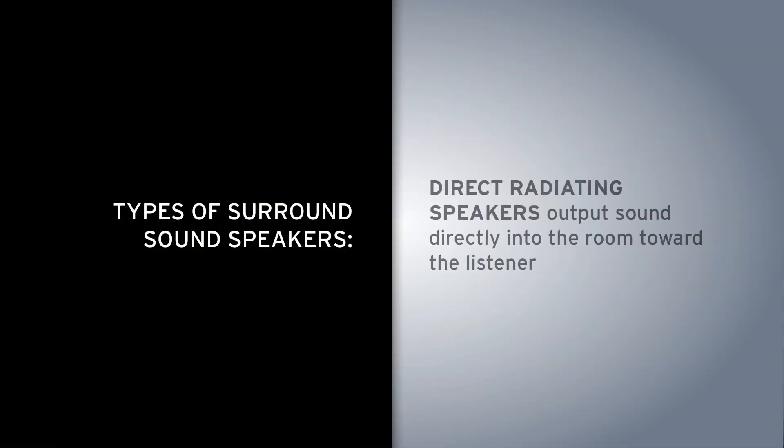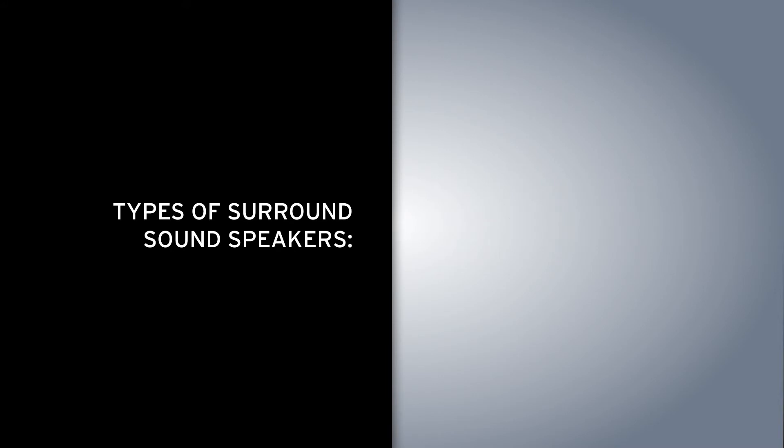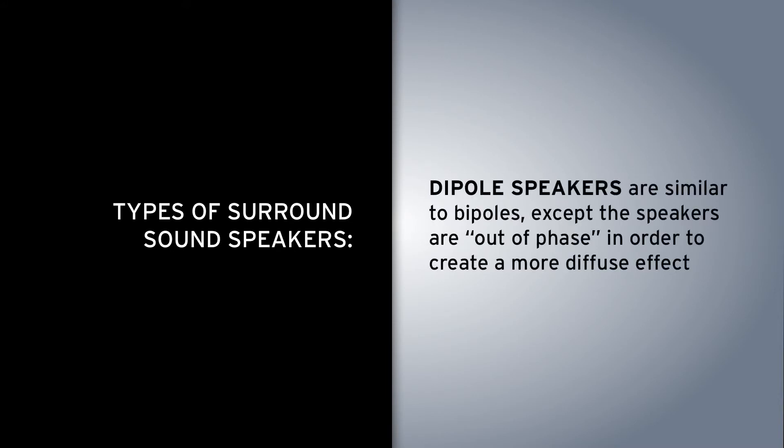You generally have three types of surround speakers to choose from. You have the direct radiating type, which is like your front speakers. You have the bipolar type and the dipole type, which are both wide dispersion speakers that spread the sound around the room to make it harder to hear the location of the speaker. You don't want to hear where the speaker is, just the sound.